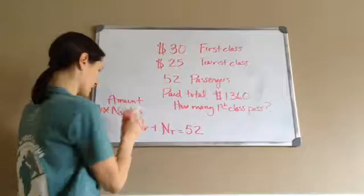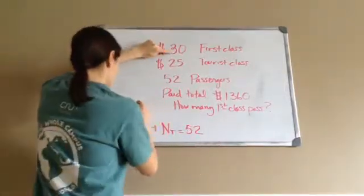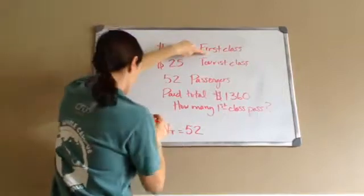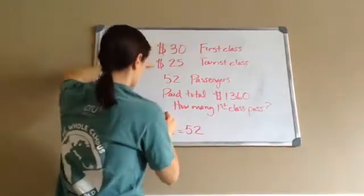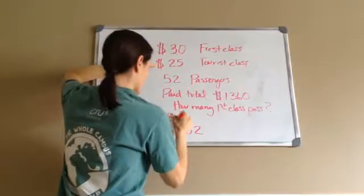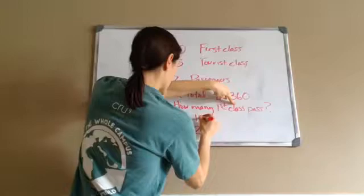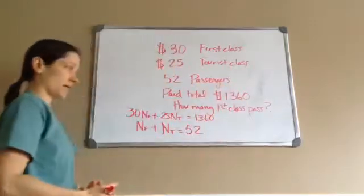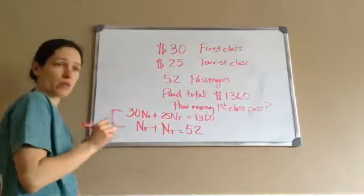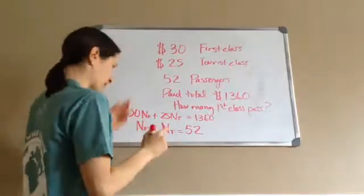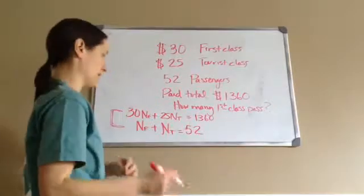Now let's do the amount one. The amount one is 30 for the number of first plus 25 for the number of tourists equals 1360. You're coming up with two equations, and you always want to come up with two equations, and the reason why is because then you're going to use the substitution method or elimination method.